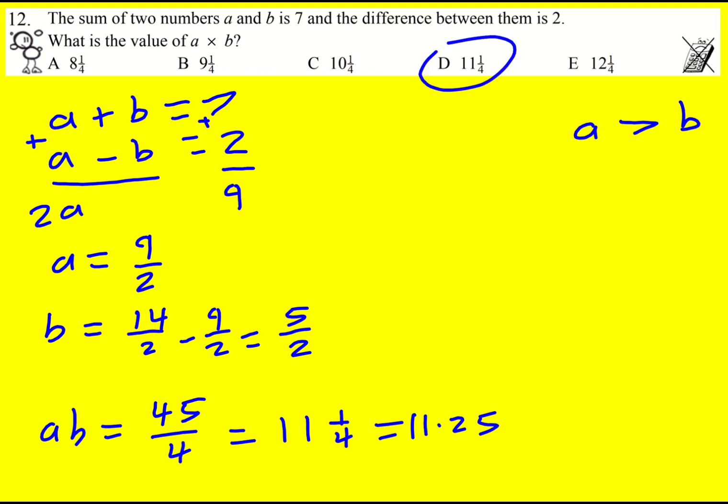Now how could you do it without finding a? Well what you can do is actually square a plus b and then minus a minus b squared.